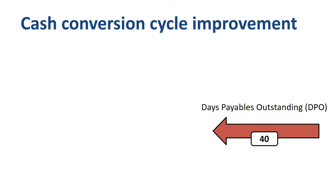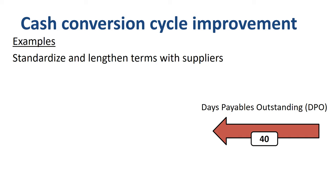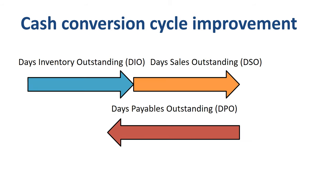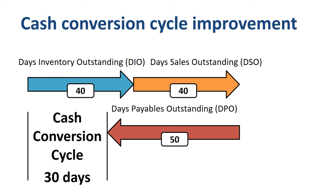The third area to look at to improve the cash conversion cycle is payables. Two main ideas to increase DPO: standardize and lengthen terms with suppliers; and reduce supplier lead times. The effect of taking these actions is that DIO is down from 50 to 40, DSO down from 60 to 40, and DPO up from 40 to 50. In total, the cash conversion cycle is reduced by more than half — from 70 days to 30. This is how companies lower working capital to maximize cash flow.